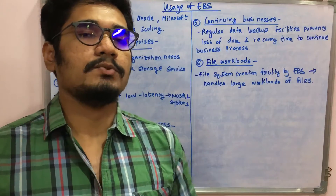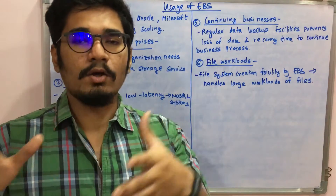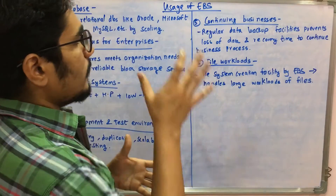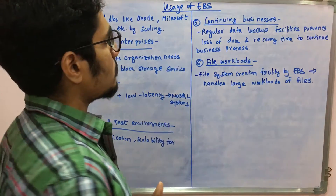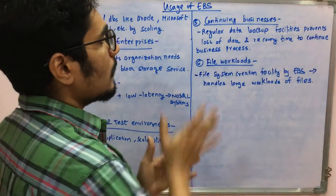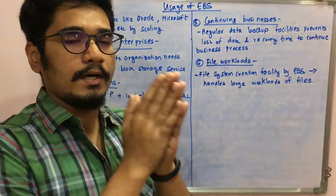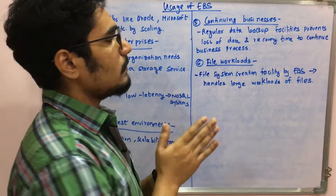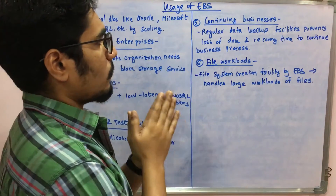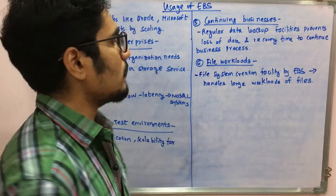Fifth is business continuity, which is crucial for any organization. EBS enables continued business processes through regular data backup facilities, preventing data loss and reducing recovery time to keep business operations running.